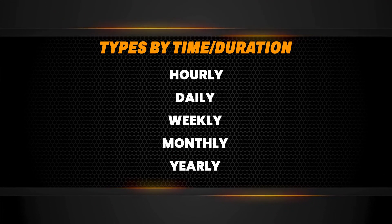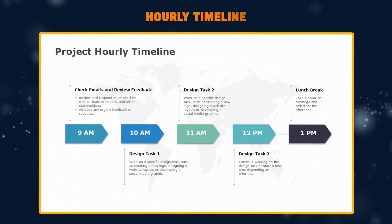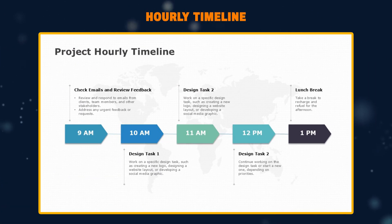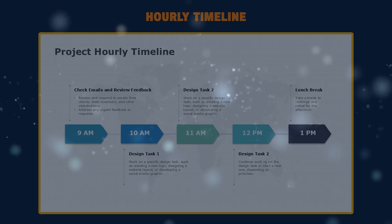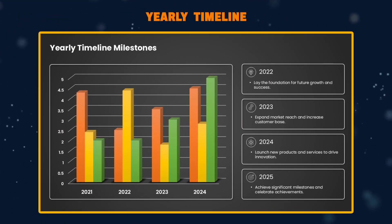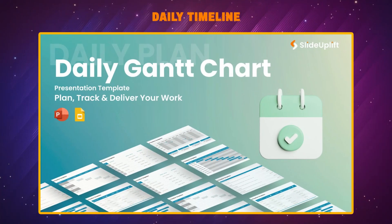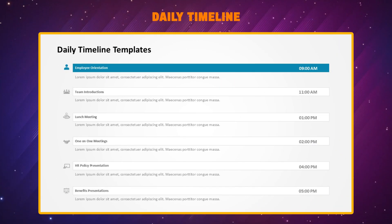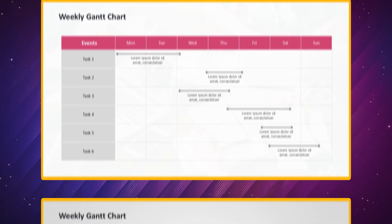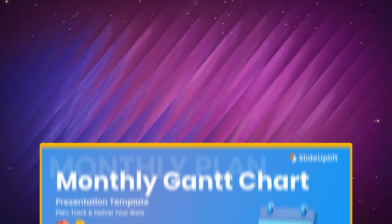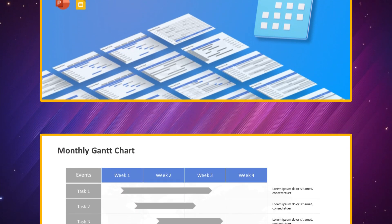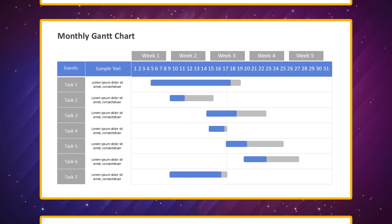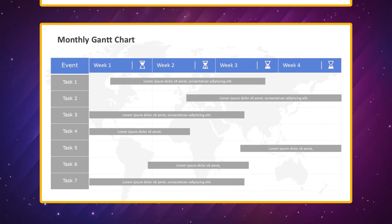Alright, let's get specific. When it comes to timeframes, you have options galore. Need to break down an entire year? Look for a yearly timeline showcasing major milestones. Maybe you're presenting a daily schedule? A daily timeline with detailed timings is your friend. Weekly and monthly timelines exist too, offering versatility for different timeframes. And for those ultra-organized folks, there are even hourly timelines, perfect for planning your minute-by-minute schedule.